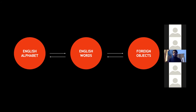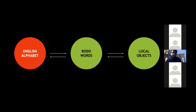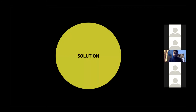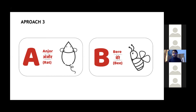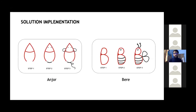We decided to teach the English alphabet using Bodo words and associating them with local objects that children are already familiar with. Moving towards the solution, we made a semantic expression within which the letter form is embedded. For example, 'A for anjur' — where 'anjur' means rat in their tribal language. The steps allow the teacher to draw an 'A' and then draw the rat out of it.